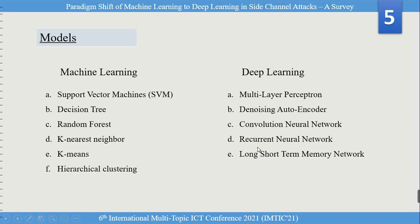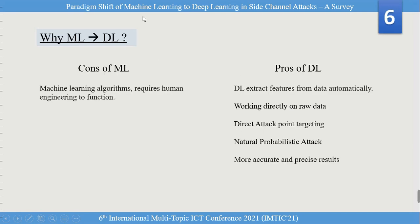We can also use transfer learning models and few-shot learning, among others. Regarding the paradigm shift from machine learning to deep learning — the cons of machine learning are that it requires human engineering for feature extraction, but deep learning automatically extracts features. Deep learning passes data through many layers, works directly on data, enables direct point targeting, provides a natural probabilistic attack approach, and gives more accurate and precise results.